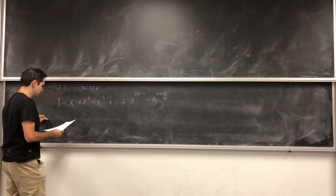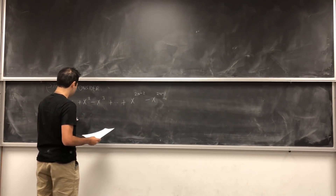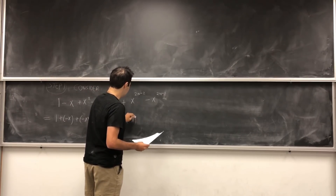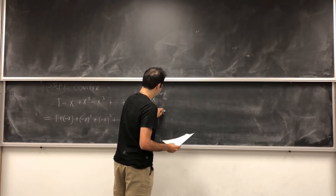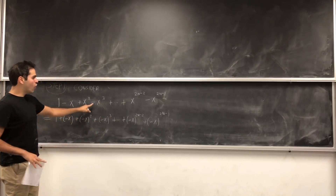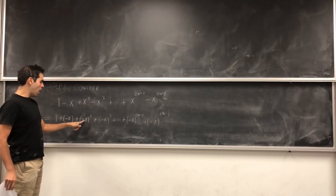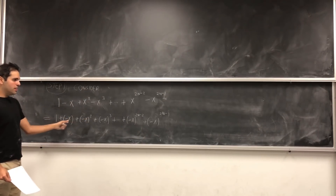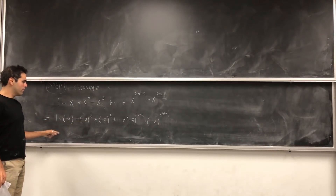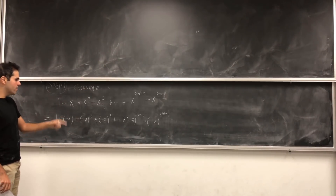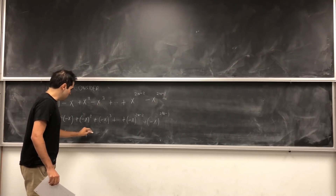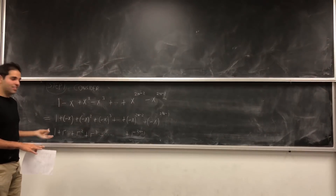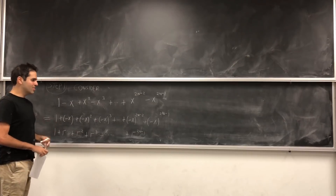It turns out we can simplify that, because this is really the same as 1 plus (minus x), plus (minus x) squared, plus (minus x) cubed, plus blah blah blah, plus (minus x) to the 2n minus 2, plus (minus x) to the 2n minus 1. That's because for odd powers we can just pull the minus out, but for even powers, minus something squared is just that something — so minus x squared is just x squared. This becomes something of the form 1 plus r plus r squared plus r cubed, plus da da da, plus r to the 2n minus 1, which is called a geometric series — whenever the terms multiply and you sum them up.